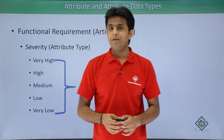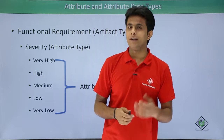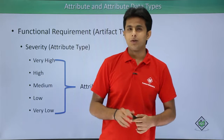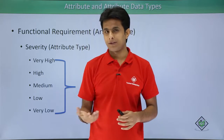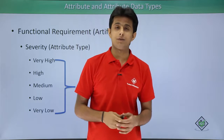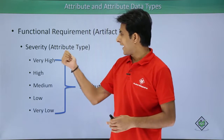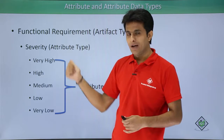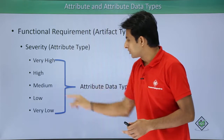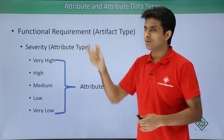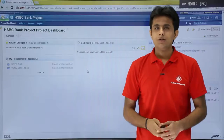To do that you need to have the project admin permission as a role. You cannot do it as a user or a guest — you have to be a project admin or a Jazz admin only then it is possible. So let us see how we create the attribute type and attribute data type, and how both of them connect and attach to the artifact type itself.